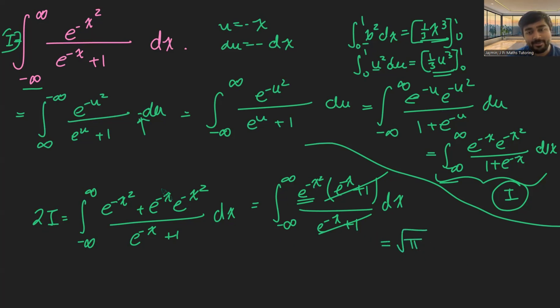And that's equal to 2i, remember. And so therefore, i is equal to root pi over 2. So this original integral here is the square root of pi divided by 2.